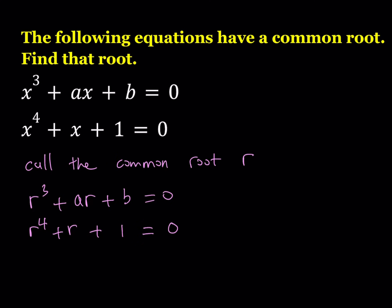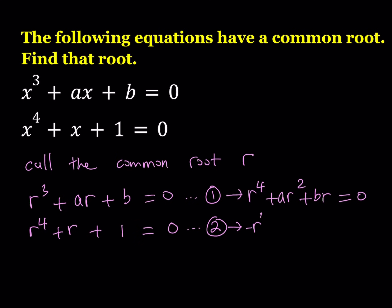Now we're going to manipulate these equations. Let me number them to keep track — equation number 1 and equation number 2. I'm going to take equation number 1 and multiply it by R, which gives R⁴ + AR² + BR = 0. Then I'll multiply the second equation by negative 1, giving negative R⁴ − R − 1 = 0. Now we add these two equations — that is, we subtract equation 2 from equation 1 after multiplying equation 1 by R. R to the fourth power cancels out.